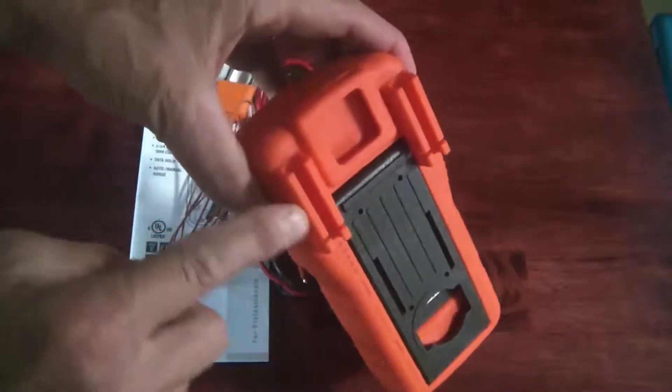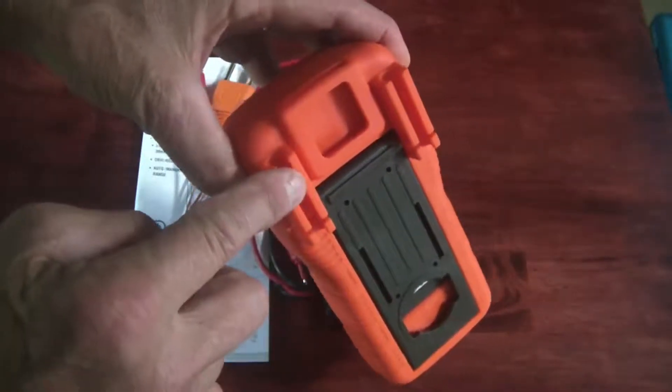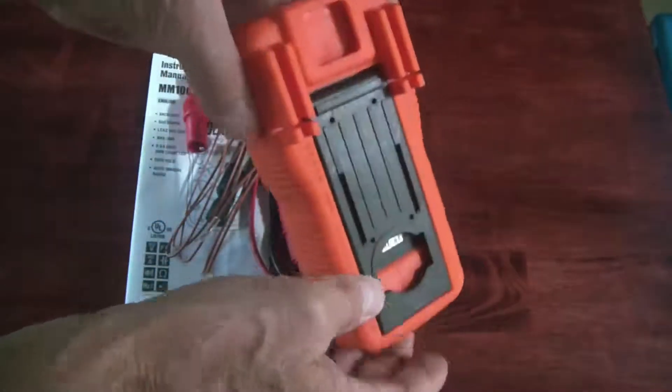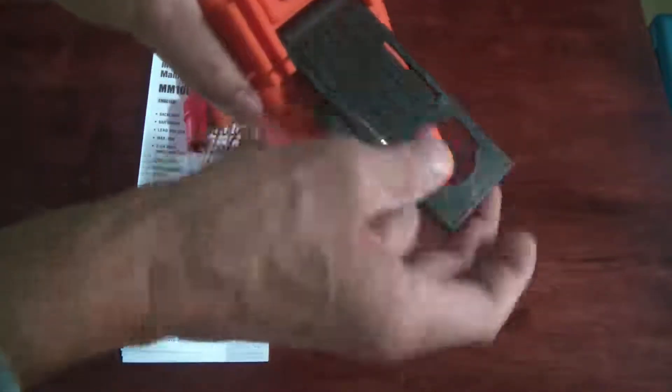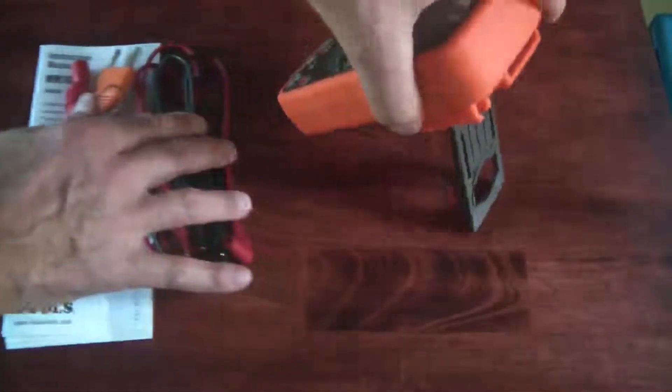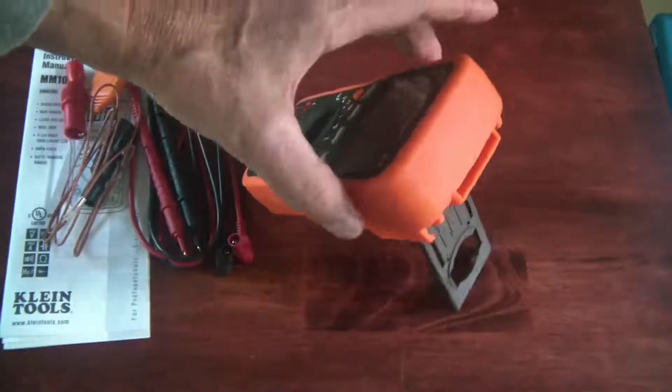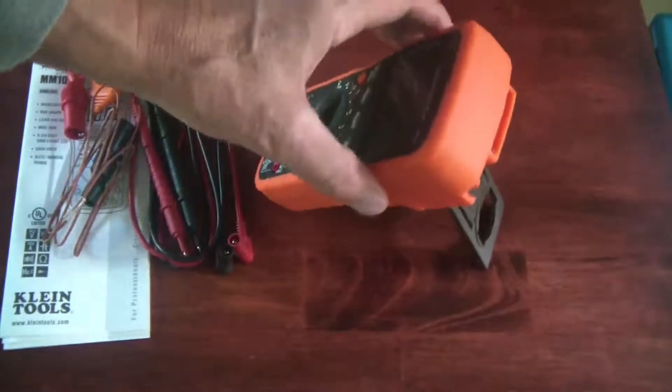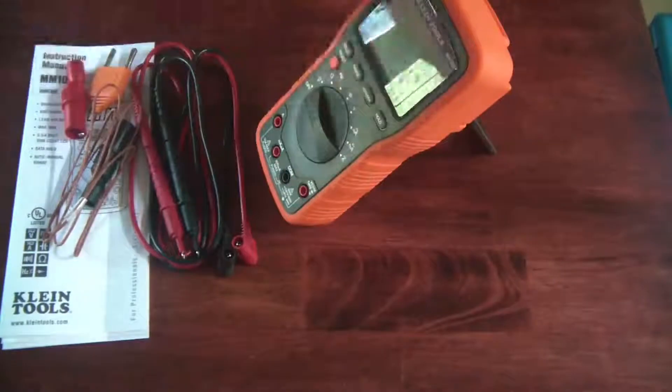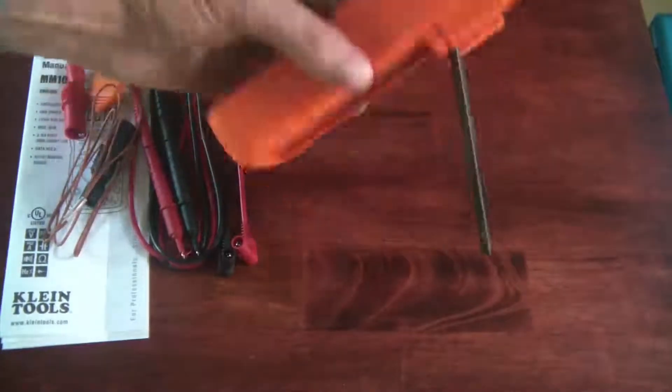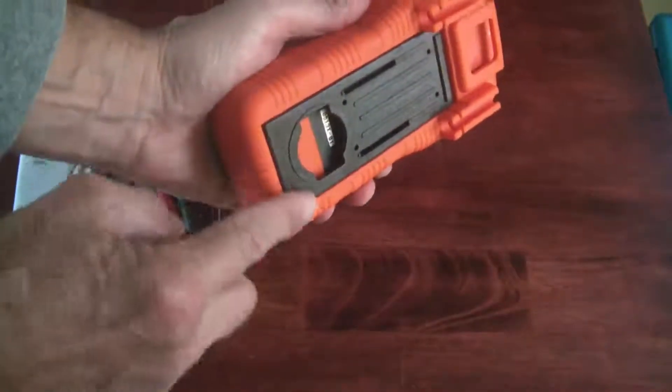You do have test lead holders on the back here and those are pretty snug. Then it does have the bail and the bail is okay, it's not fantastic, it's a little narrow, so when the multimeter is on a table or a flat surface it does rock around a little bit if you're not too careful, but as far as just having it hold it up, it does that and it just pushes right back into the case.